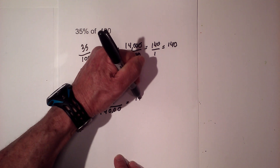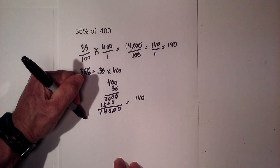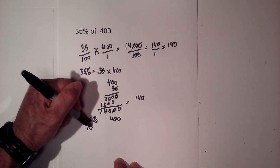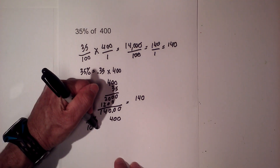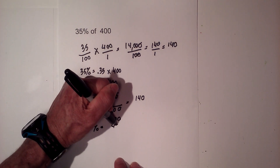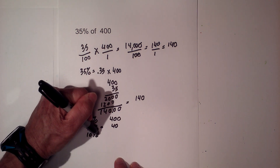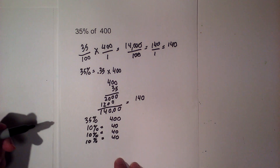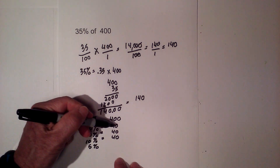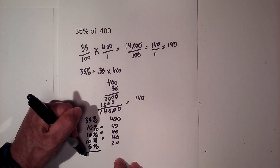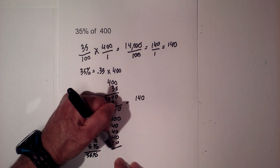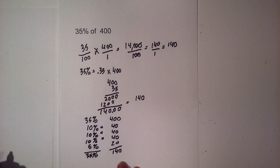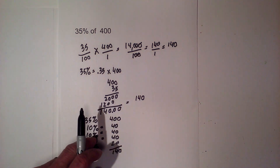Now estimate 35% of 400. Move the decimal one place left: 10% equals 40. Another 10% equals 40, and another 10% equals 40 — that's 30%. For the remaining 5%, half of 40 is 20. Adding together: 40 plus 40 plus 40 plus 20 equals 140. That's the estimation method confirming 140.